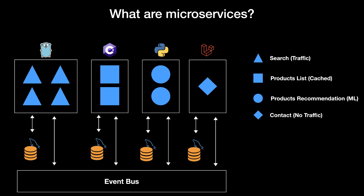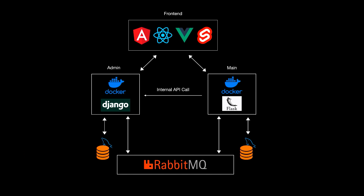Now let's jump to the application we will build. We'll create a simple microservices example using Python. The frontend will be built with Angular, React, Vue, or Svelte — you can pick your favorite. The backend is composed of two apps: an admin app built with Django and a main app built with Flask. Both will run in Docker, connect to their own MySQL database, communicate using RabbitMQ events, and in one case the main app will internally call the admin app.